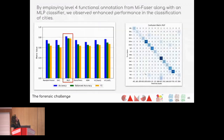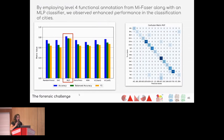The results showed that annotation with MinPath/HUMAnN was the best database, level four functional annotation gave the best classification, and the MLP algorithm performed best — nearly hitting 0.8 F1 accuracy. The confusion matrix shows how well this model predicted city of origin. It's not great but it's good.